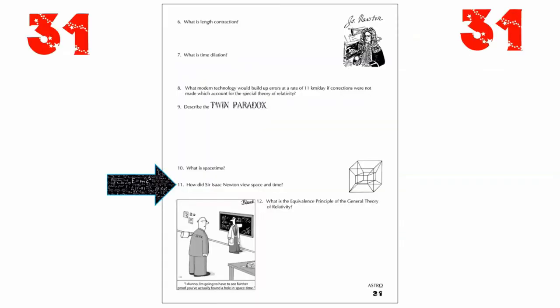Continuing on page 31 — this question of how did Sir Isaac Newton view space and time. Newton is around in the 17th century, whereas Einstein is around in the 20th century. This is not to say Newton disagreed with Einstein — it was just the best understanding of space and time within the lifetime of each gentleman. I think if Newton had been alive in a time where he could have been familiar with Einstein's work, he would most certainly agree with the theories of relativity.